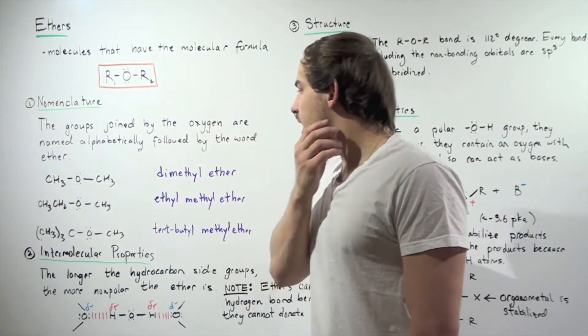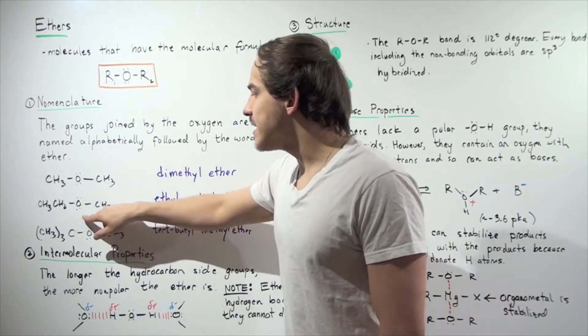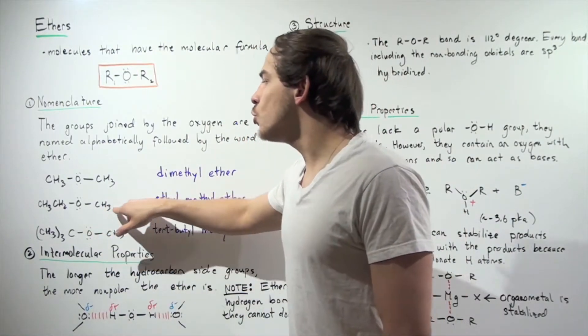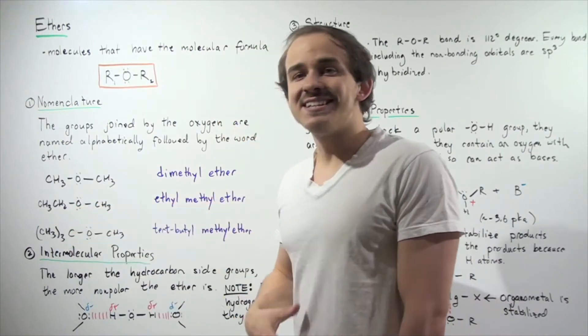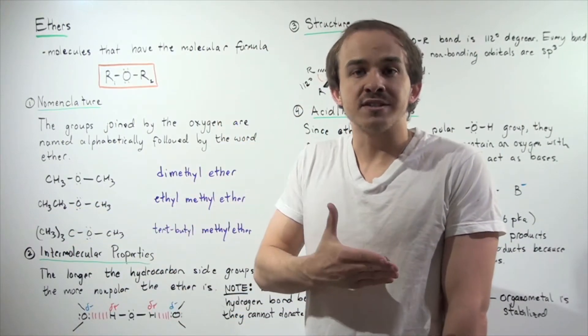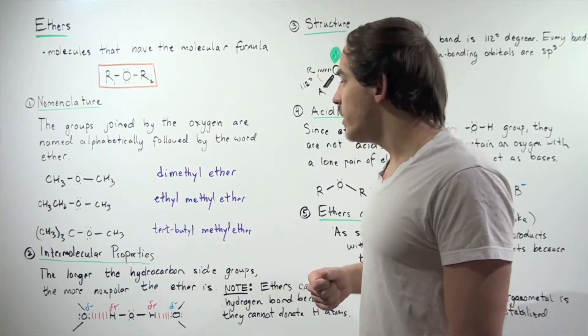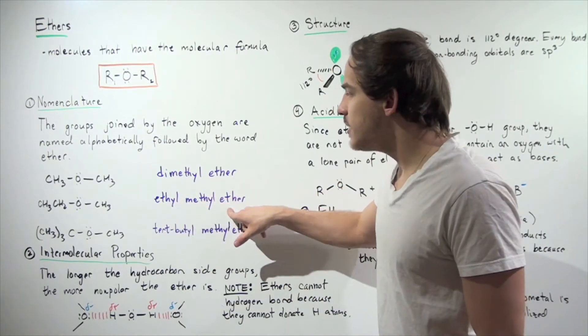Let's look at the second ether. Here we have a central oxygen attached to two different R groups: methyl and ethyl. Since ethyl comes before methyl, since E comes before M in the alphabet, we name it ethyl methyl ether.